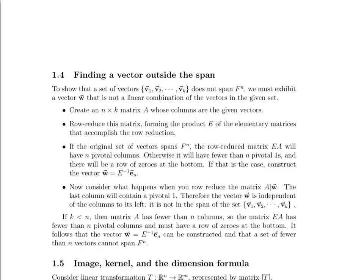This section is about how to find a vector that's outside the span of a given set of vectors. Say we're given a set of k vectors, v1 through vk, living in F^n, and our task is to prove that this collection does not span F^n. We want to find a vector w that is not a linear combination of v1 through vk — it cannot be written as a sum of scalar multiples of v1 through vk.